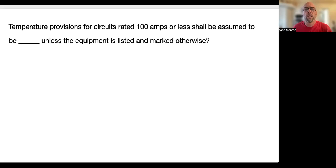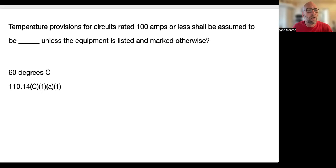Temperature provisions for circuits rated at 100 amps or less shall be assumed to be blank, unless the equipment is listed and marked otherwise. That is 60 degrees Celsius — 110.14(C)(1)(a)(1). So when you're rating your wire and it's less than 100 amps, you use that 60-degree column unless otherwise specified.